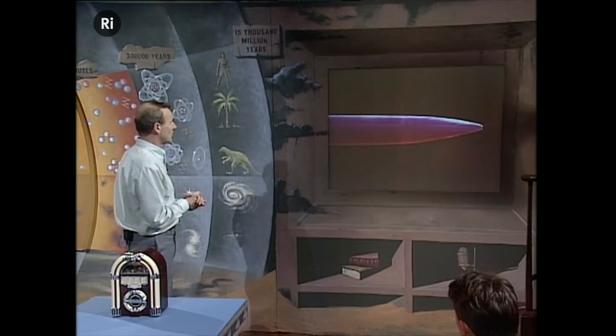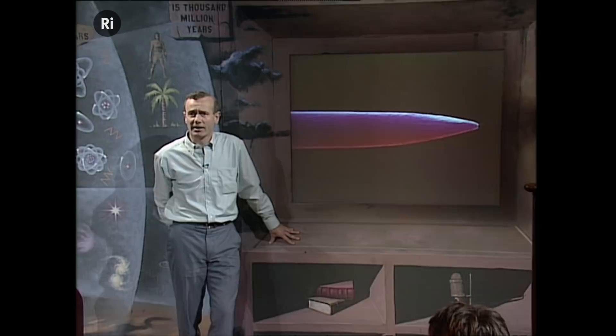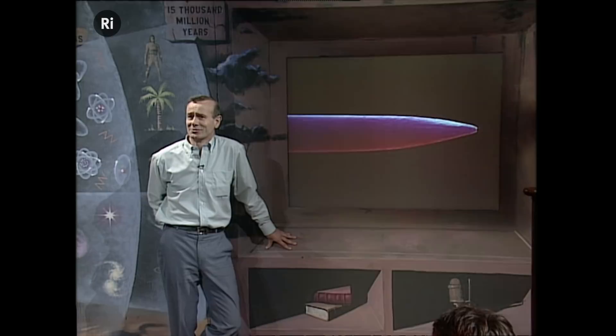An electron microscope, sort of on this bench here, we could use to take pictures down towards the level of molecules. Here is a picture of a pinhead taken with an electron microscope — it's still recognisable as a pin. And if we go in and look in more detail, you can see bacteria on the surface of the pin, as well as the grooves where it's been ground.